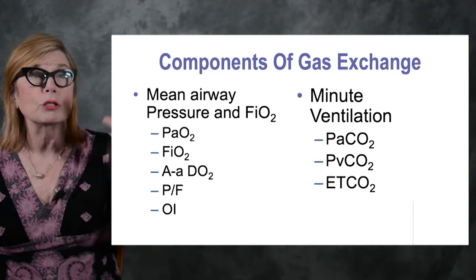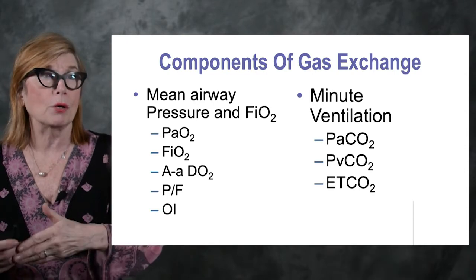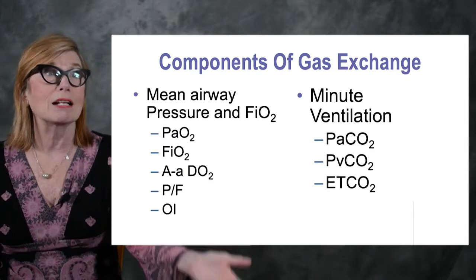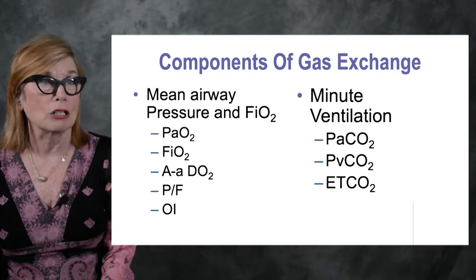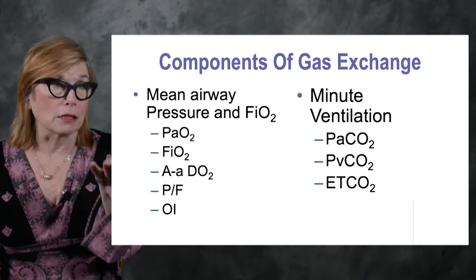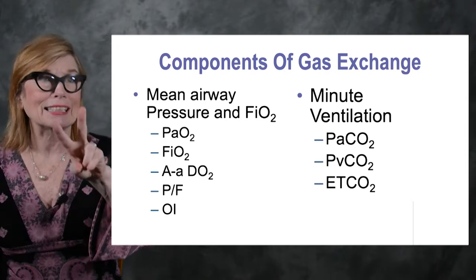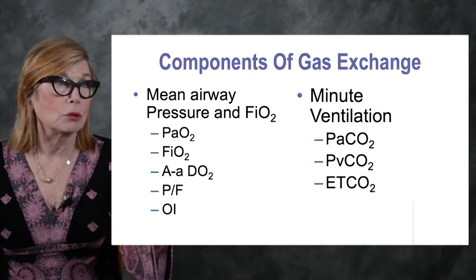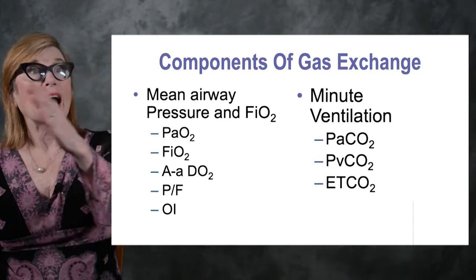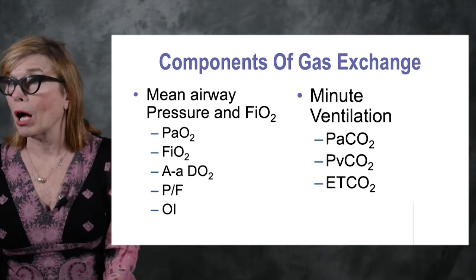Mean airway pressure and FiO2 are about oxygenation. When I use mean airway pressure strategies with the ventilator — prolonged inspiratory time, PEEP, CPAP, BiPAP — I raise the mean airway pressure and should see better oxygenation. I also change FiO2: if I deliver more oxygen and the alveoli are open with good blood flow, gas exchange should improve. Everything I do with the ventilator is a test to find out if I can improve gas exchange. CO2 removal is driven by minute ventilation, which is frequency times tidal volume — respiratory rate × tidal volume.